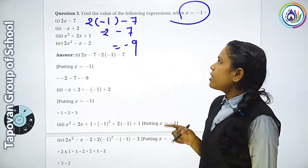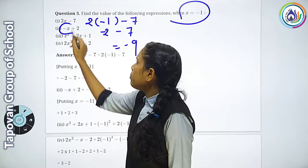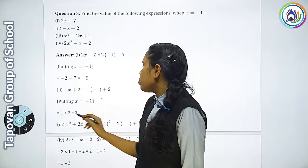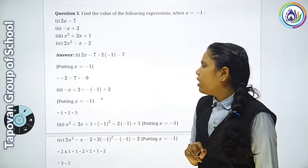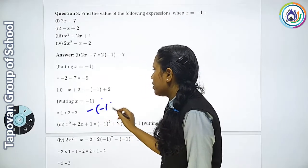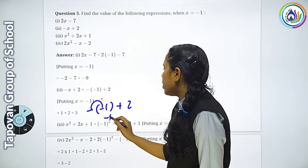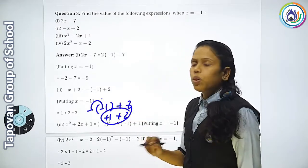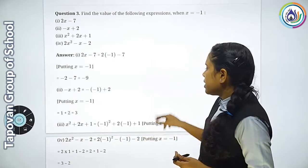फिर है -x+2. तो x की जगह पर minus 1 रखना है। -(-1)+2 = plus 1+2 = plus 3. यानि minus x = plus 1, plus 2, तो plus 1 + 2 = plus 3.